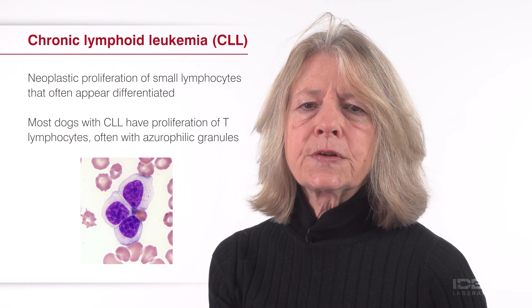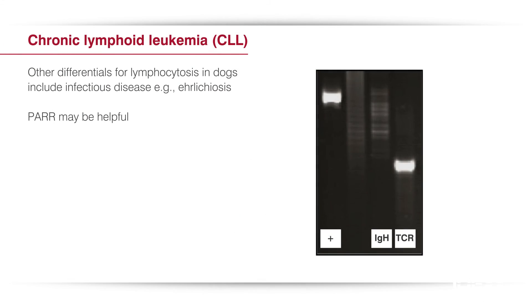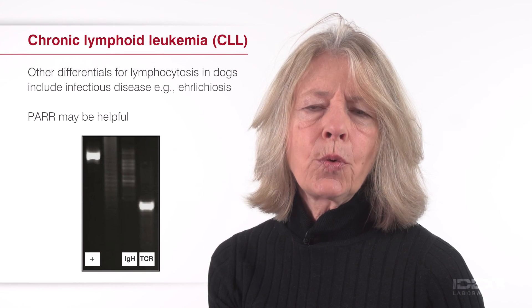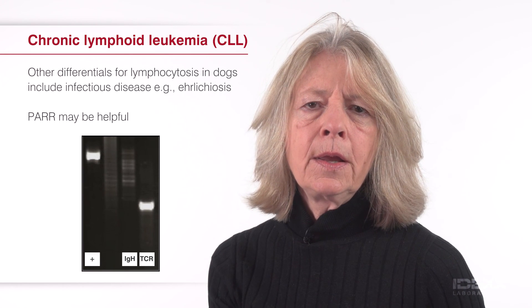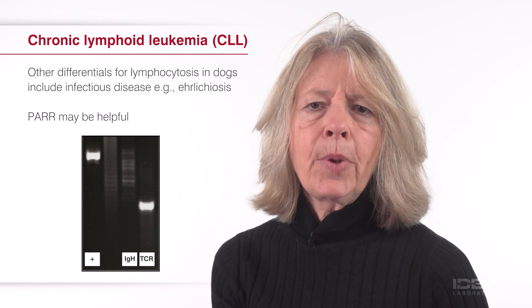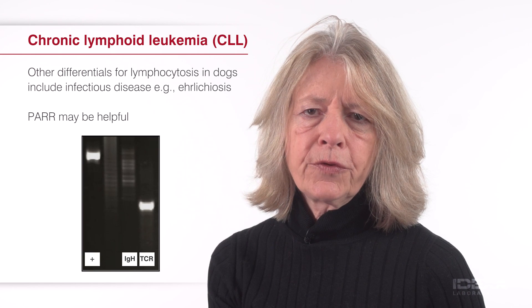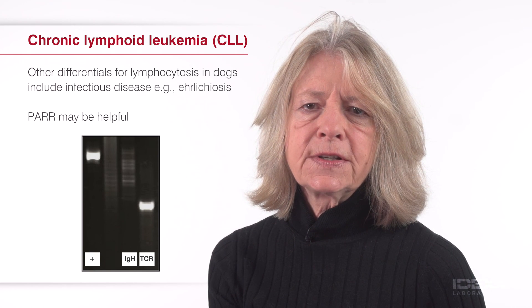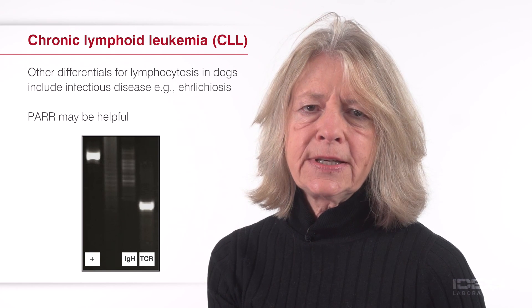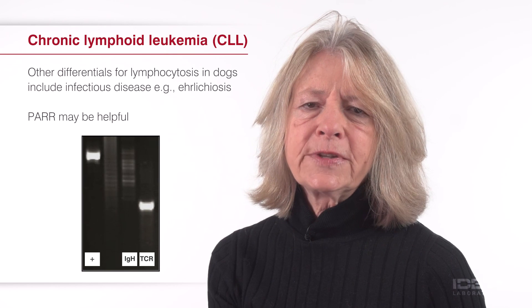The clinical course for CLL may be months to several years. Some dogs with infectious diseases, for example Ehrlichia canis infection, have lymphocytosis that resembles CLL. Polymerase chain reaction for rearrangement of antigen receptors, or PAR, may be helpful in differentiating polyclonal lymphocyte proliferations associated with infectious disease or inflammatory diseases from CLL.